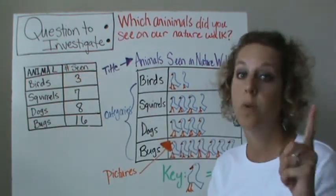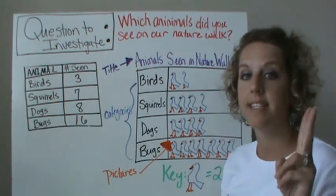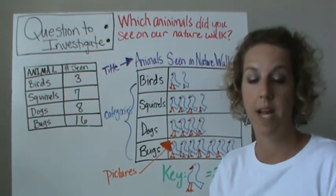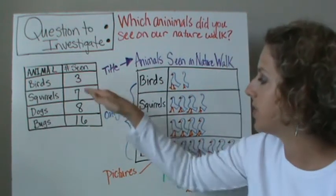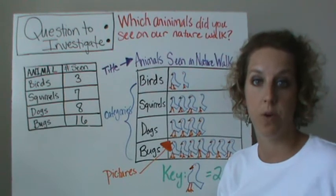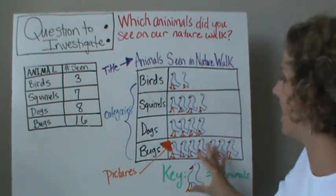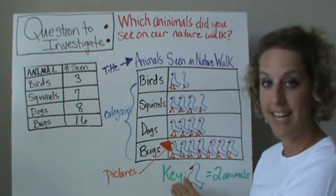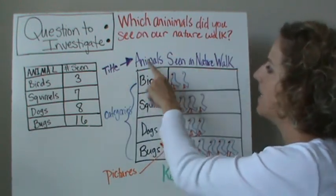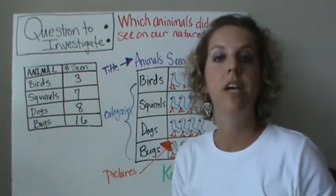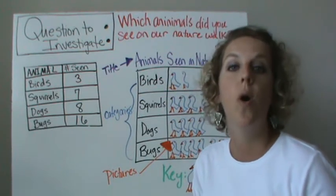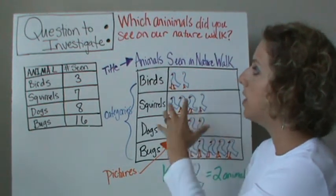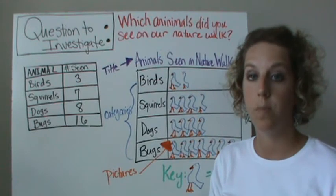So the first step was to formulate your question — done. The second step was to design the data investigation — we had four animals we were looking for. The third step was to collect the data by making observations on our nature walk. The fourth step is to organize it by constructing a graph. Remember: take cool pictures of kids. So we want to make sure we have a title. I titled ours 'Animals Seen on Nature Walk,' so that even if you didn't know the question, you'd know what the pictograph was about.